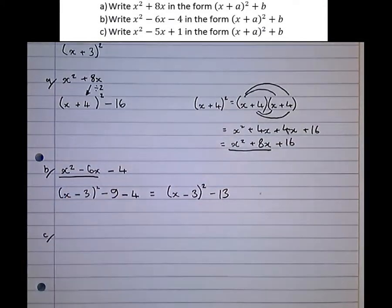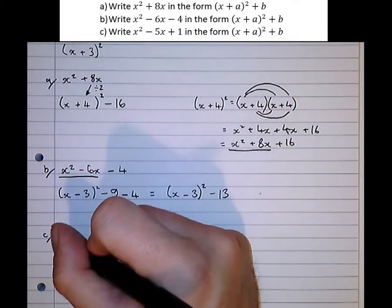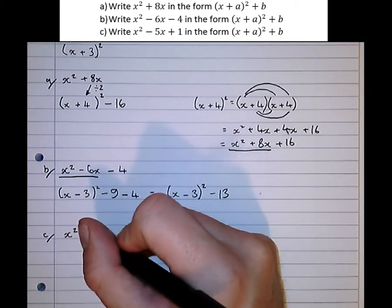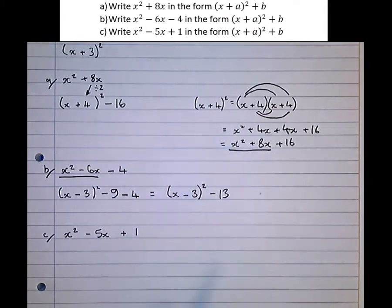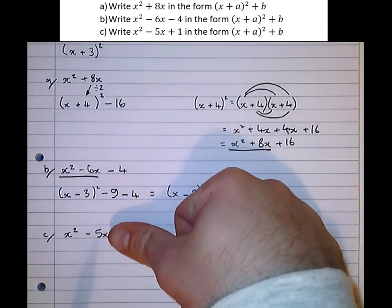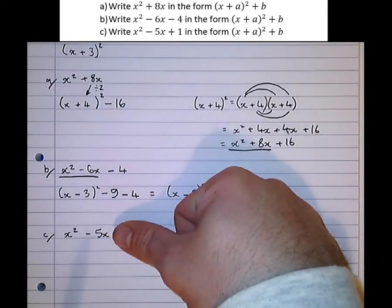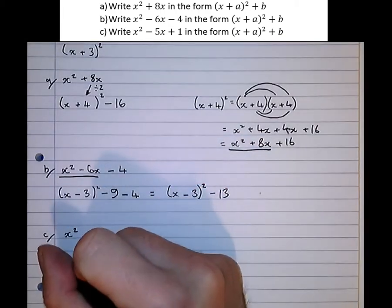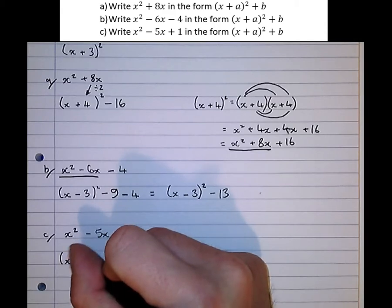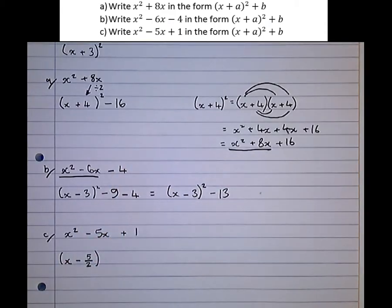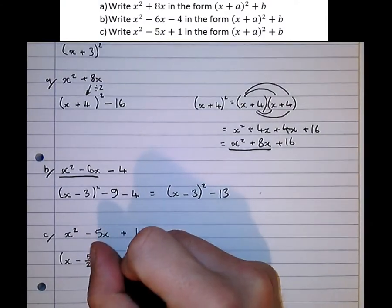Part C, slightly more complicated again: x² - 5x + 1. So again, completely ignoring this one here, just complete the square for x² - 5x. Now half of minus 5 is minus 5 over 2. We don't do decimals, we use fractions here. It makes it much easier to do the maths, squared.